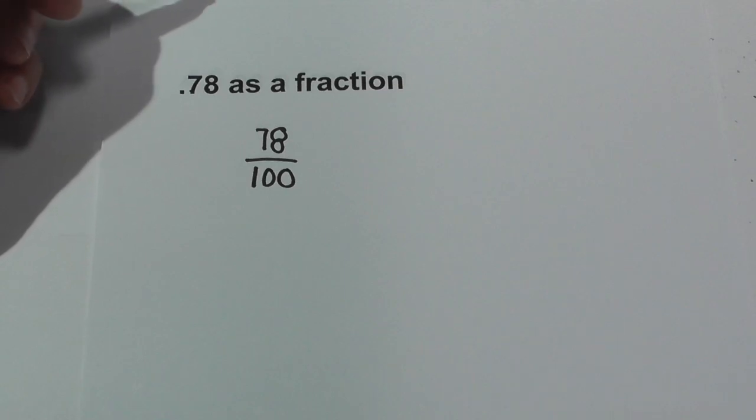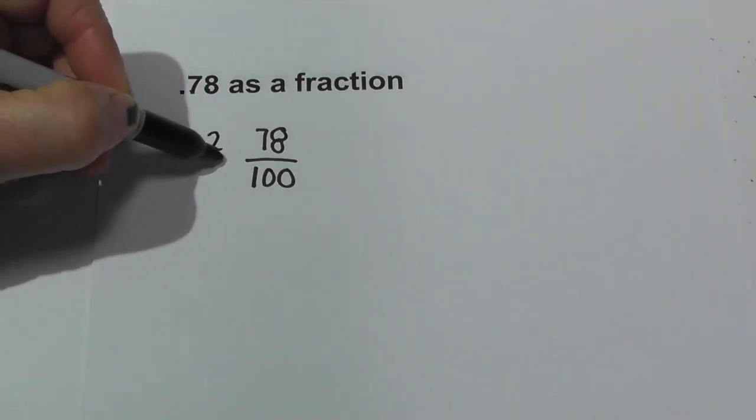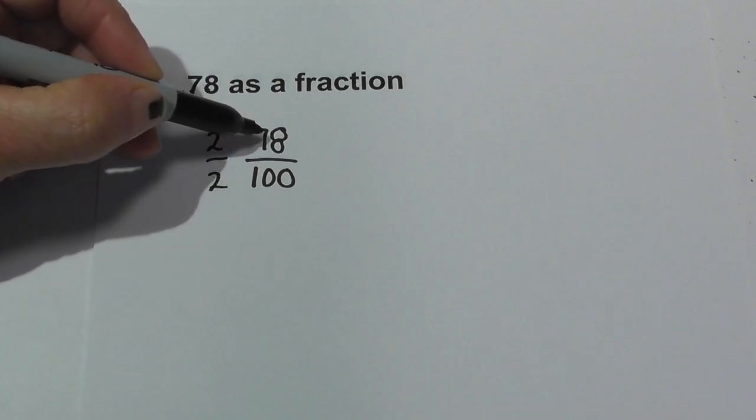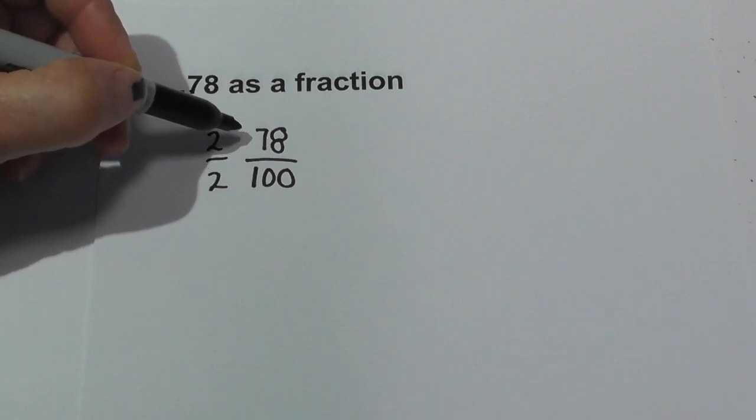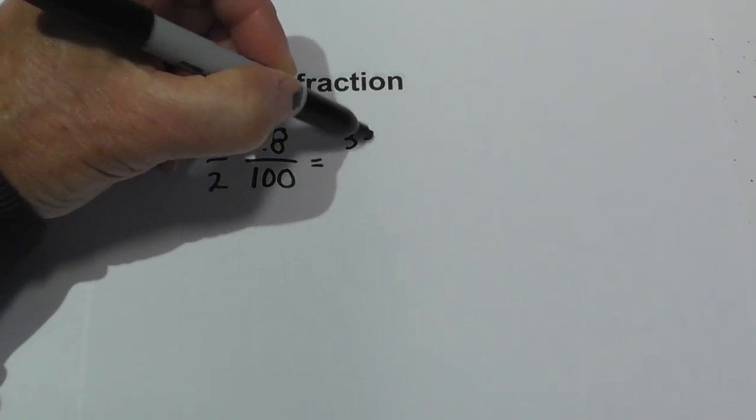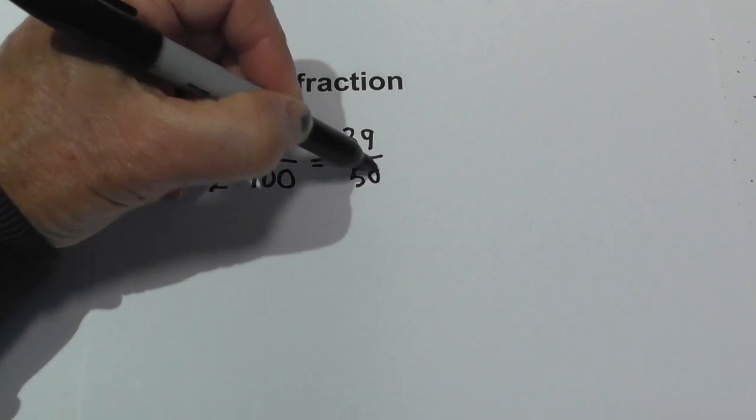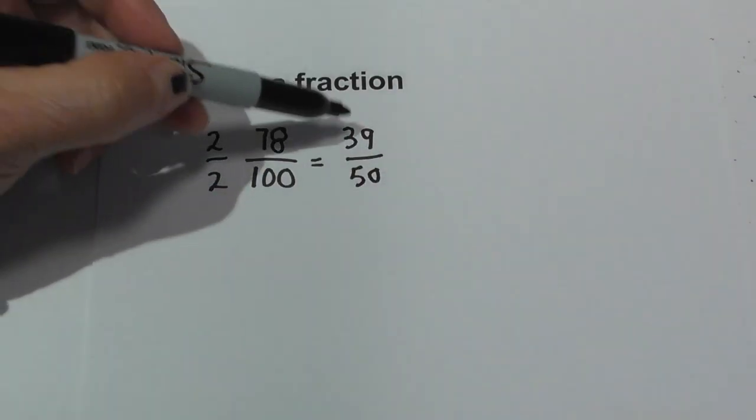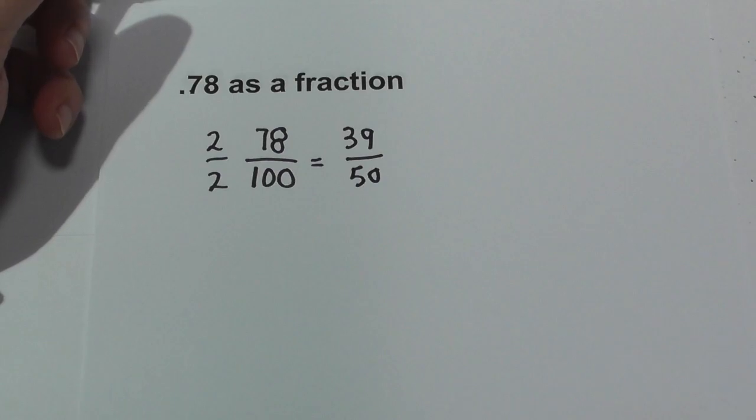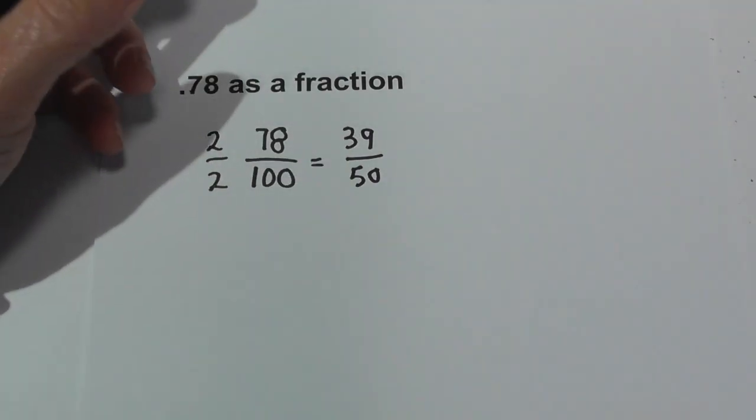So we have 78 over 100. Now I can reduce this by dividing both the numerator and denominator by 2. So 2 goes into 78 thirty-nine times and 2 goes into 100 fifty times, and 39 is a prime number. So 0.78 as a fraction is 39 fiftieths. I hope that helps.